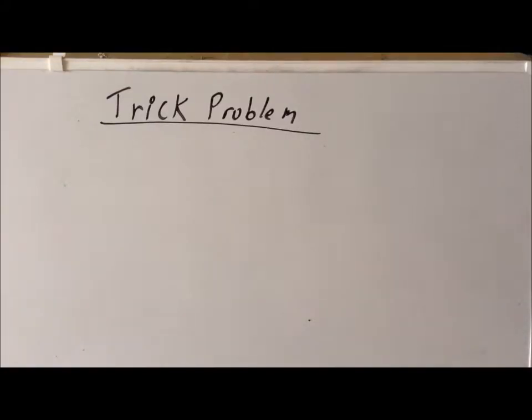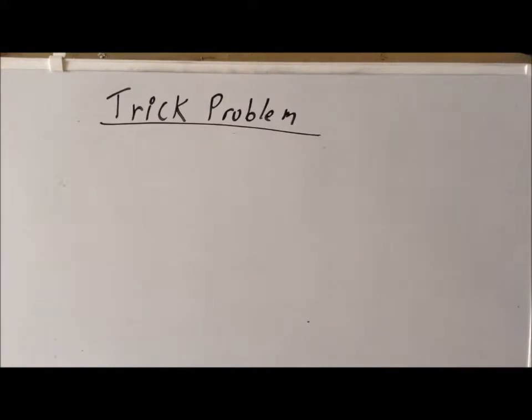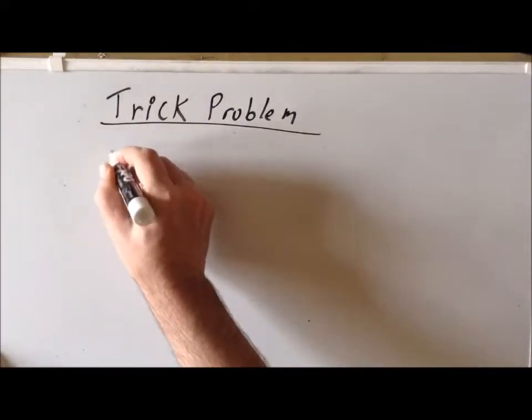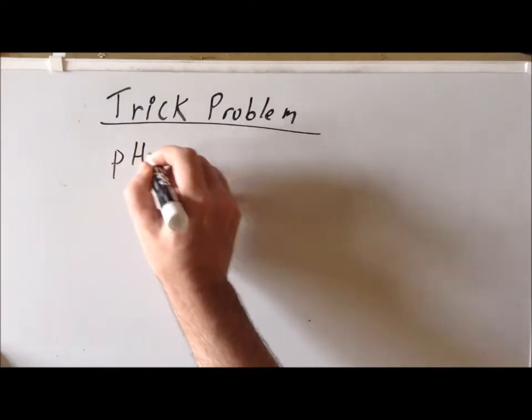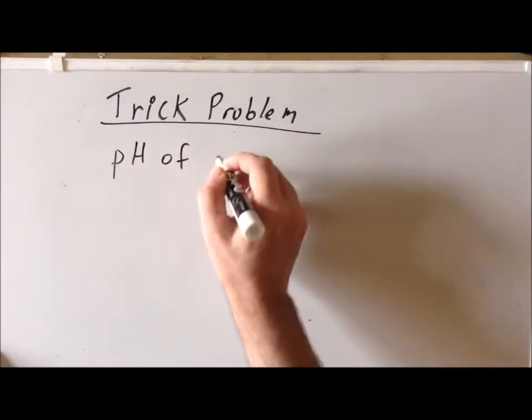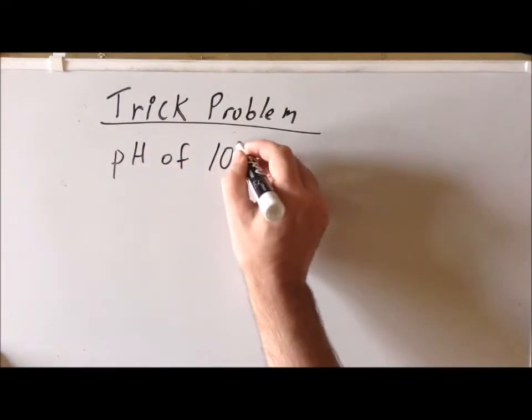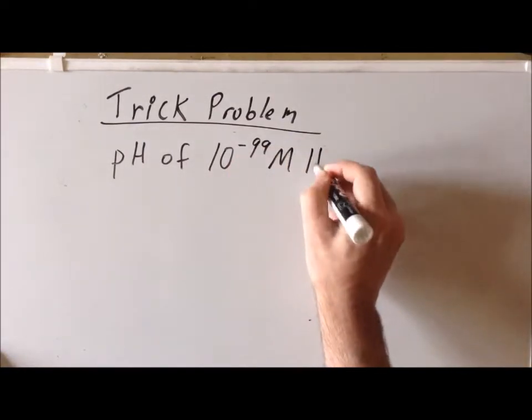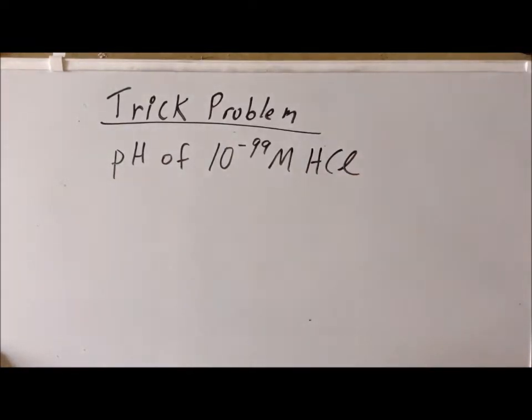In this video, we are going to solve a problem with a strong acid that I am going to warn you ahead of time is actually a trick problem. What we want to solve is the following: we want to find the pH of a solution that is 10 to the minus 99 molar hydrochloric acid in water.